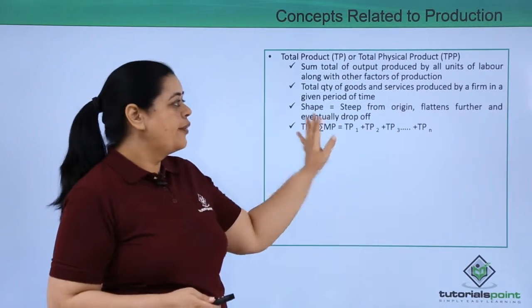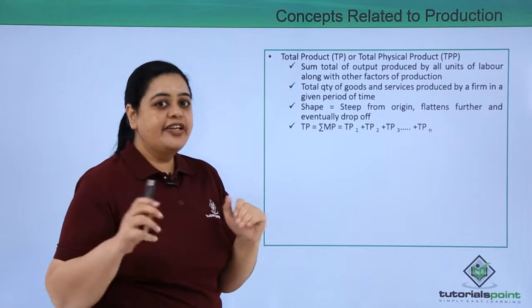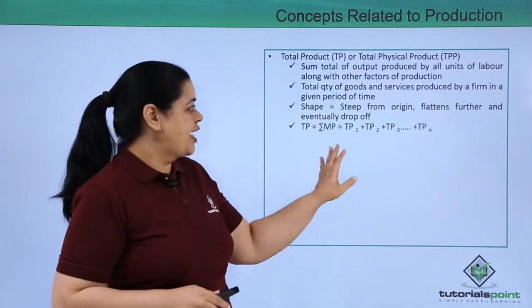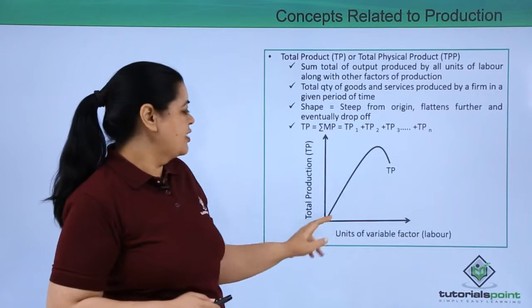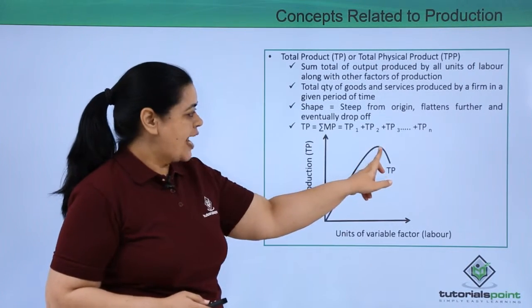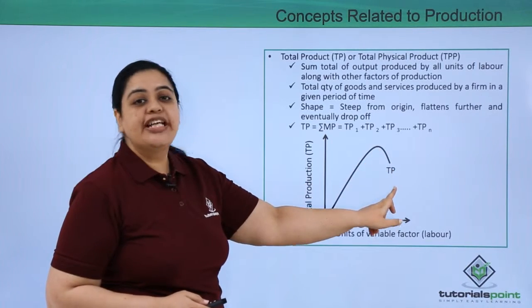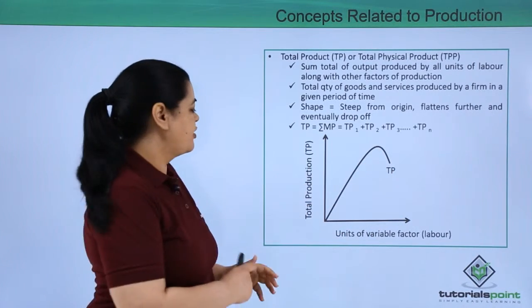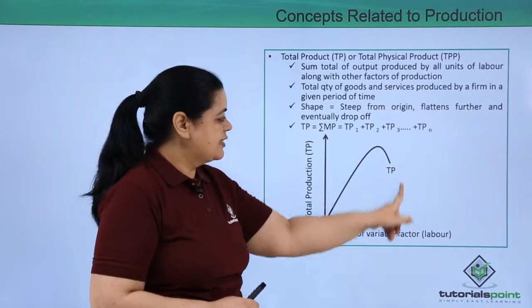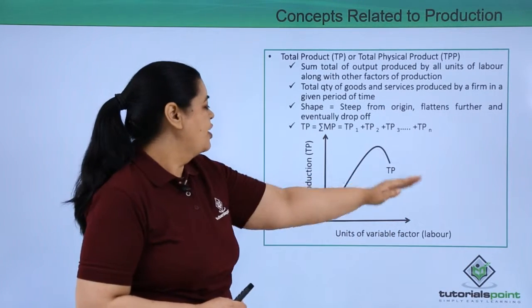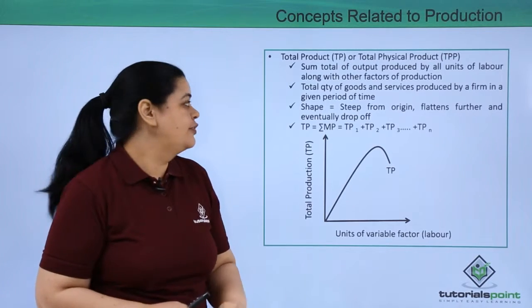Now when I have to graphically represent it, the shape here of TP would be steep from origin as you can see here, then it would flatten and then eventually it would drop off. So here you can see it is steep from origin, then it gets flattened and then it starts dropping off. This is how the total production curve looks like.